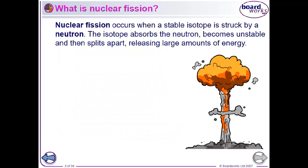Nuclear fission happens when a stable isotope is struck by a neutron. The isotope absorbs a neutron, so the nucleus of the atom absorbs this neutron. Remember the neutron doesn't have any charge so it doesn't get repelled from the positively charged nucleus, but the neutron has to strike the nucleus pretty much dead on.